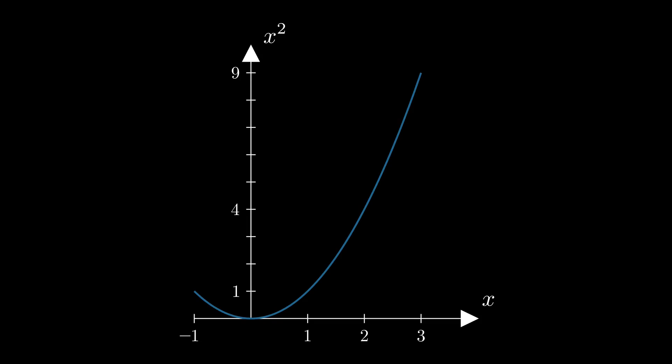Let's take an example: f of x equals x squared. From classical calculus, we know that the derivative—the continuous rate of change, the gradient of the tangent at each point—of this function is 2x.